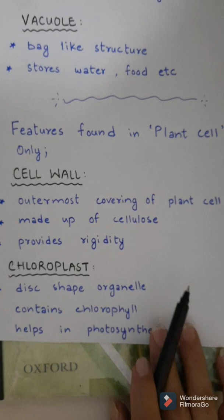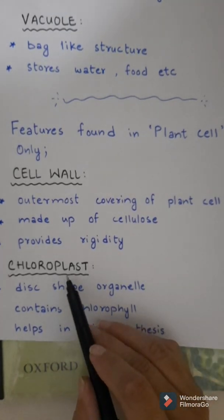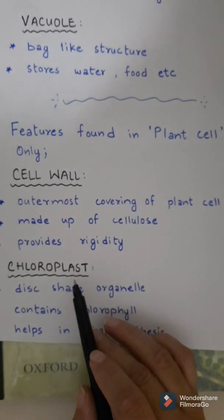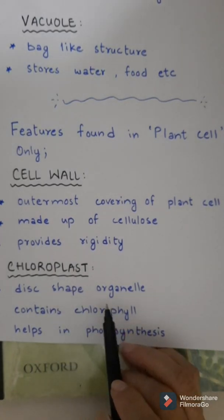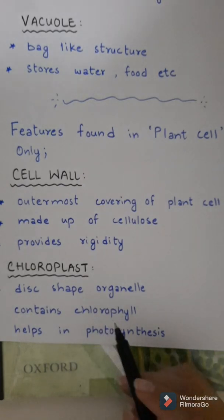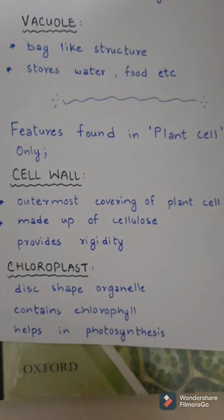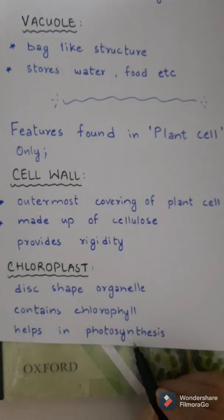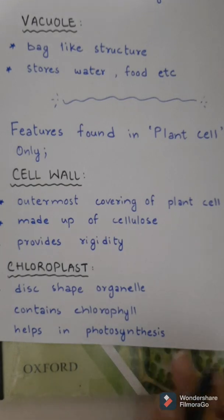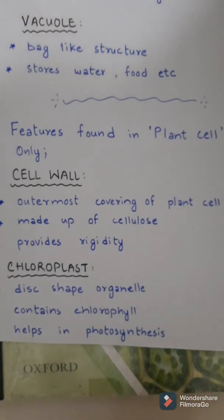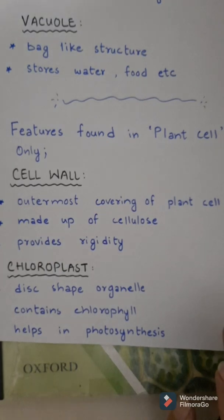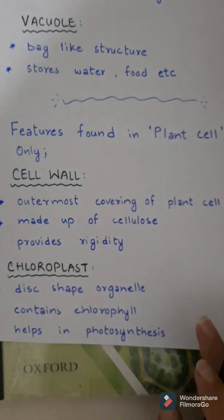Then we have another characteristic organelle called the chloroplast, which is only present in the plant cell. What is chloroplast? Chloroplast is a disc-shaped organelle. It contains a green pigment called chlorophyll. Chlorophyll helps in the trapping of sunlight energy for the process of photosynthesis — the process by which plants make their own food in the presence of sunlight and chlorophyll from carbon dioxide and water.